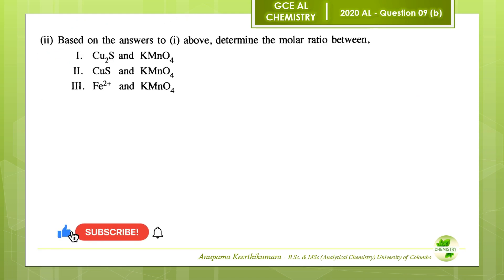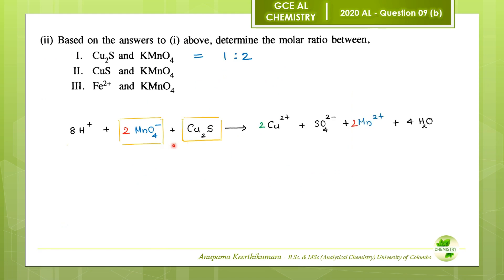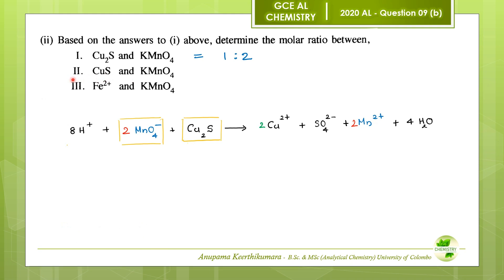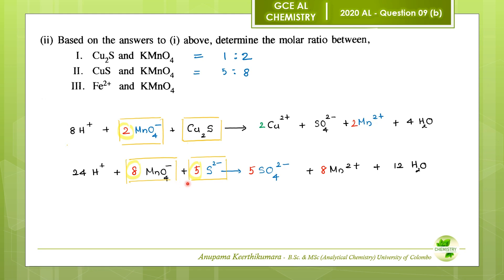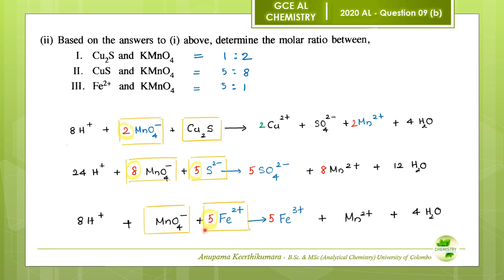Question 2: From the balanced equations, the molar ratios are as follows. The molar ratio between copper(I) sulfide (Cu₂S) and KMnO₄ is 1:2. The molar ratio between copper(II) sulfide (CuS) and KMnO₄ is 5:8. The molar ratio between Fe²⁺ ions and KMnO₄ is 5:1.